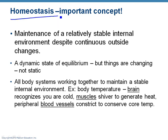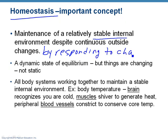Key concept: homeostasis. This is something we're going to talk about throughout 201 and 202. What does it mean? It's to maintain a stable environment despite changes — to maintain that stable environment by responding to change. For example, I want my body temperature to be 98.6. As this room gets cold, my body responds by shivering to bring my temperature back up. Although my body temperature dropped a little, my body recognized that and responded. That's homeostasis.